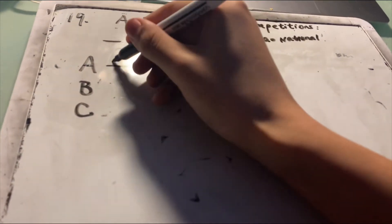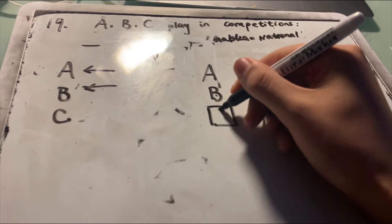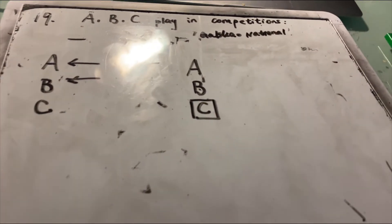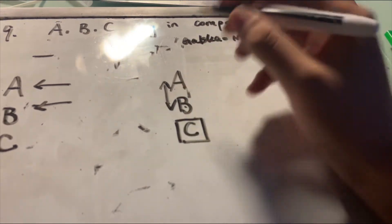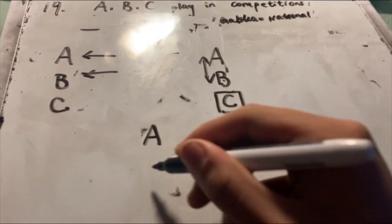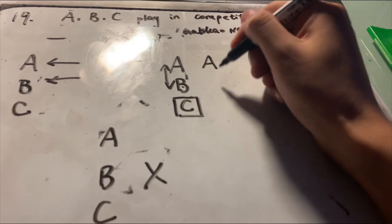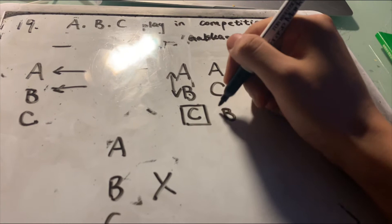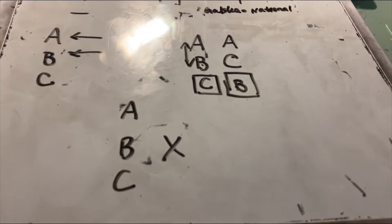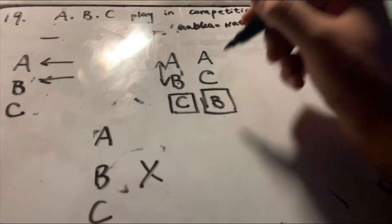Let's take A, B, and C — three people. In the first round, the random generator shows that A and B participate, and C draws a bye. We assume A wins and B loses, so B has lost once. Then A competes against C. In this round, let's assume A loses and C wins.